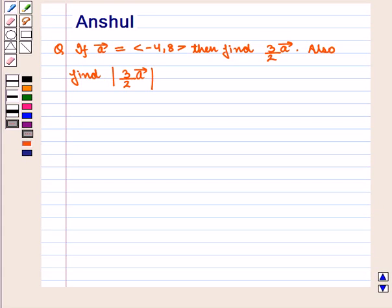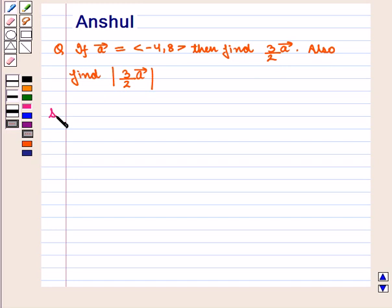Hello and welcome to the session. In this session we are going to discuss the following question: If vector A is equal to the ordered pair (-4, 8), then find 3/2 into vector A. Also find the magnitude of 3/2 into vector A. Now let us start with the solution of the given question.